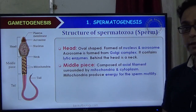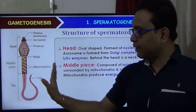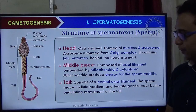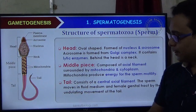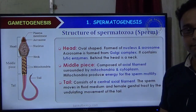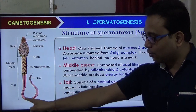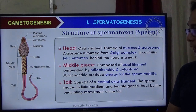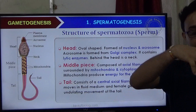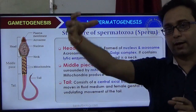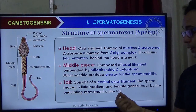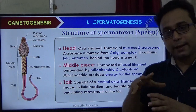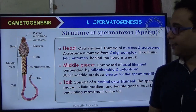The middle piece contains spiral mitochondria, which ultimately supply energy. The spark of motility is provided by this middle piece. The tail part contains the central axial filament, which is a continuation throughout the tail. The tail is the main structure responsible for movement of the sperm, providing motility.